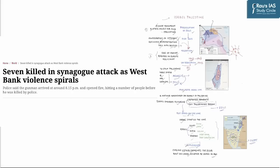Whenever you read an article on the Israel-Palestinian conflict, there are always terms like Golan Heights, Gaza Strip, West Bank, and Israeli settlements. It is very difficult for beginners and aspirants to understand these terms. To understand them, you have to go through complicated history which needs to be simplified — and that is what Daily News Simplified is all about.